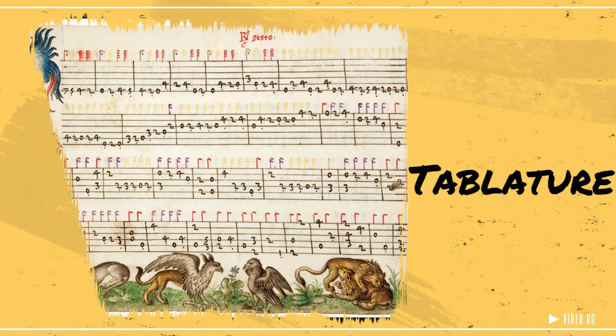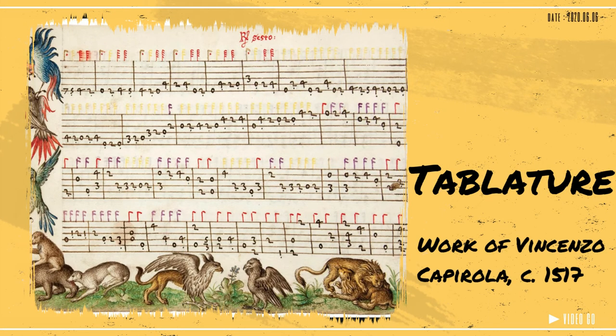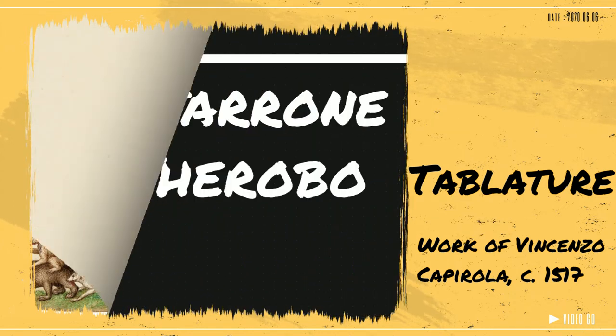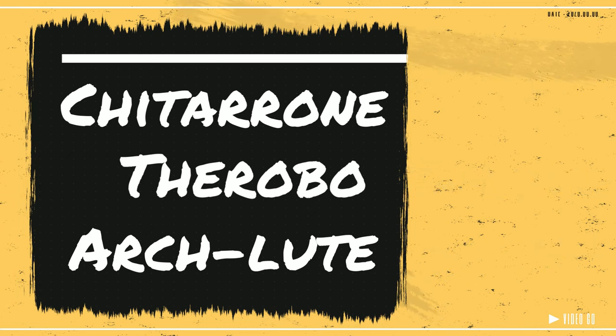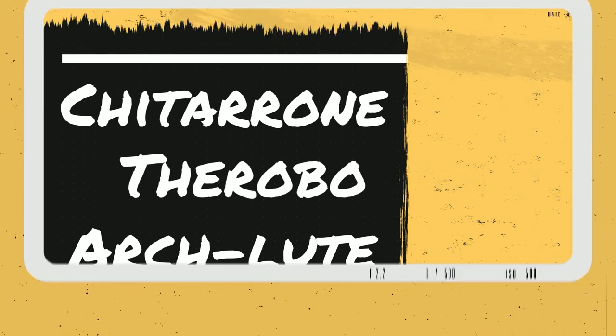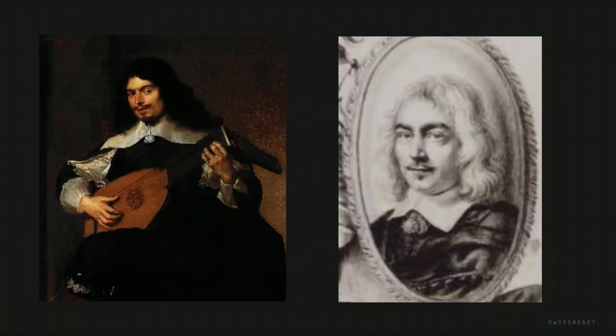Music then was written in tablature. This here is a manuscript from Italian composer Vincenzo Capiroa, circa 1517. After 1600, alterations of the lute were created: the Chituron, Therobo, and Arc Lute. Musicians Jacques and Denis Gaultier heavily influenced future harpsichord compositions.